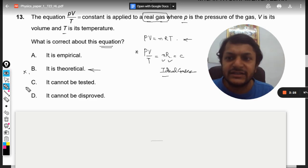It cannot be tested. It can be tested. If they have applied this equation and they found it to be right, okay fine. So it can be tested, so even C is wrong and even D will be wrong.